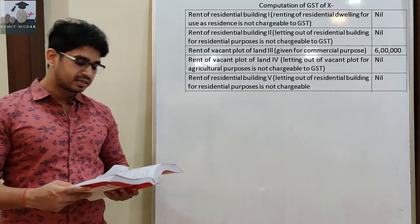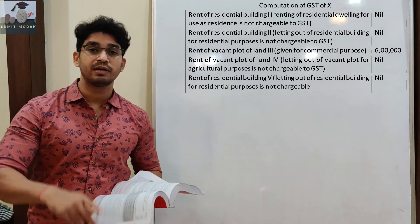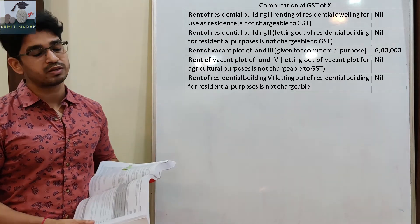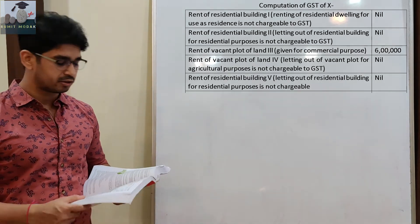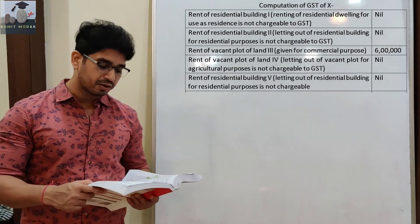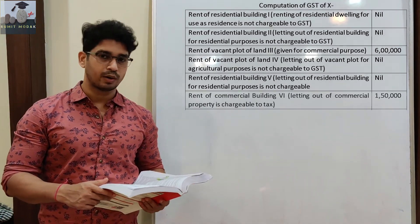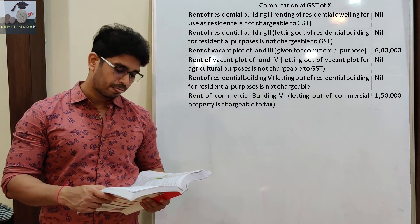Rent of commercial building 6 - remember, a commercial building is always chargeable to GST. Letting out of commercial property is chargeable to tax. So Rs. 1,50,000 is included in the taxable column.